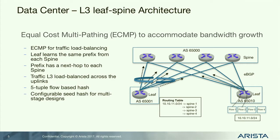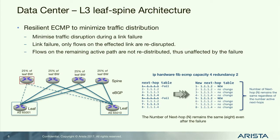With that design becoming more prevalent, we're seeing optimizations to address resiliency aspects of ECMP and network upgrades. A classic problem with ECMP is that it's based on the number of next hops, so if I have a link failure I have to rehash everything over my three remaining next hops — a single link failure affects all traffic.